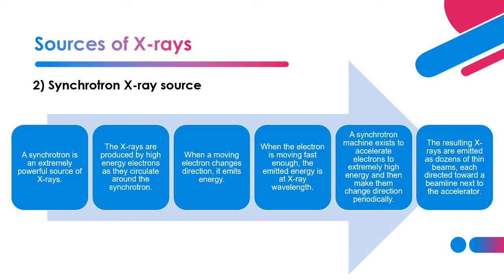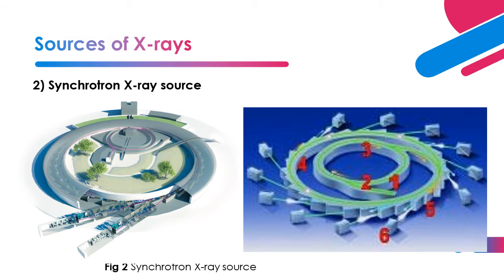The picture shows the synchrotron X-ray source device. From the picture on the right, high-energy electrons go from position 1 to 2, then change direction and move towards 3, continuing into level 4, until reaching position 5 where the X-ray is generated in the form of a thin beam. Dozens of beams are generated next to the accelerator.